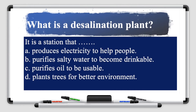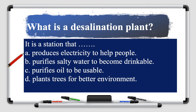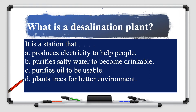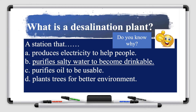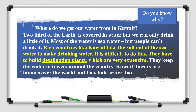Did you find the answer? Let's read the options. A: Produces electricity to help people. B: Purifies salty water to become drinkable. C: Purifies oil to be usable. D: Plants trees for better environment. The answer is B — purifies salty water to become drinkable. Let's go back to the sentence: rich countries like Kuwait take the salt out of the seawater to make it drinking water; it is difficult to do this; they have to build desalination plants, which are very expensive. Because desalination plants take the salt out of the seawater — that's what they do.